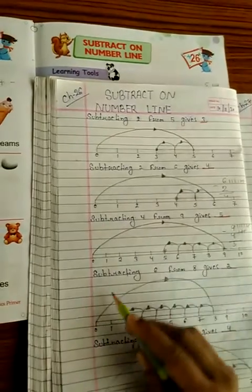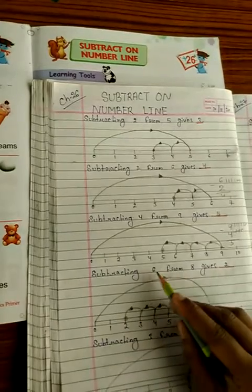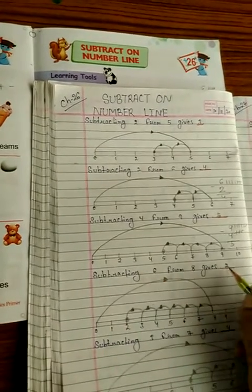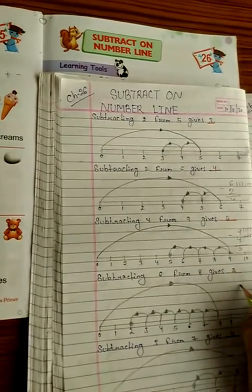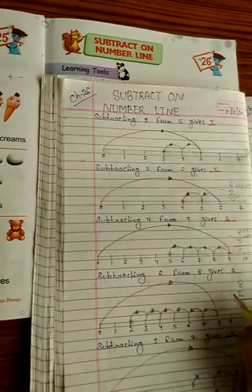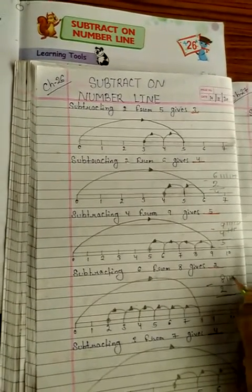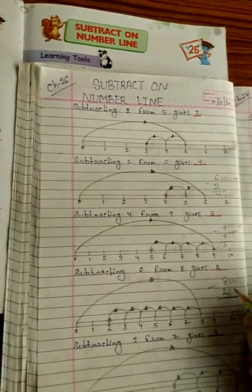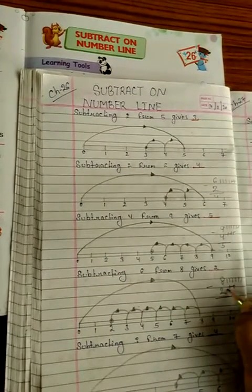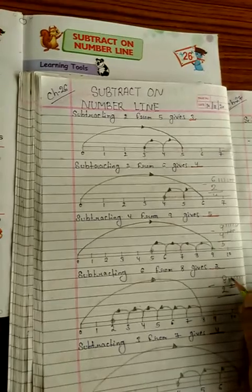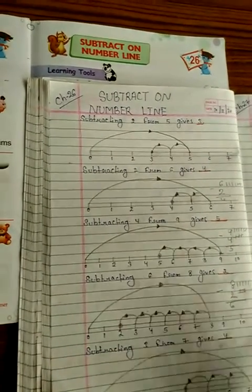Next question: subtracting 6 from 8 gives 2. If we do 8 minus 6, the answer will be 2. So first, draw 8 lines: 1, 2, 3, 4, 5, 6. Sorry — 8 lines. Then how many lines do we have to cancel? 6 lines. The left ones: 1, 2. So 8 minus 6 is equal to 2.